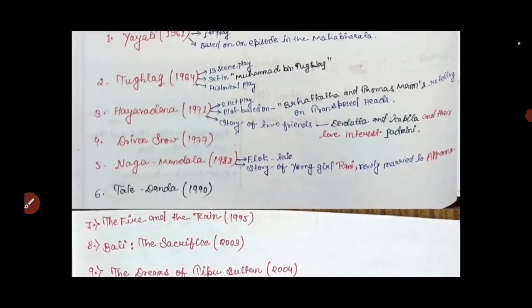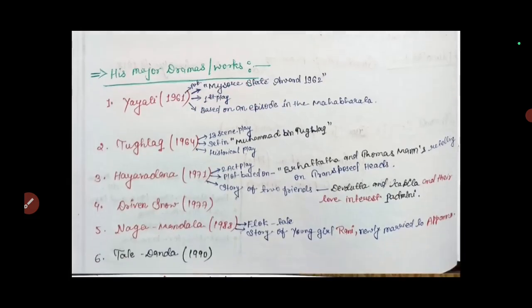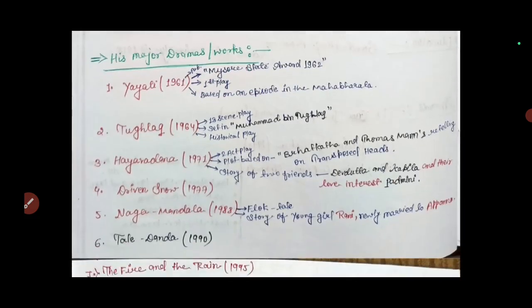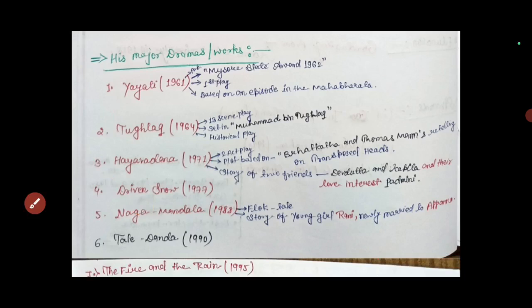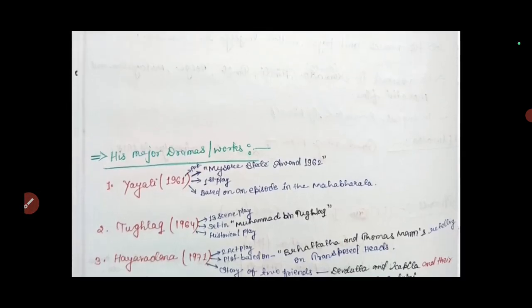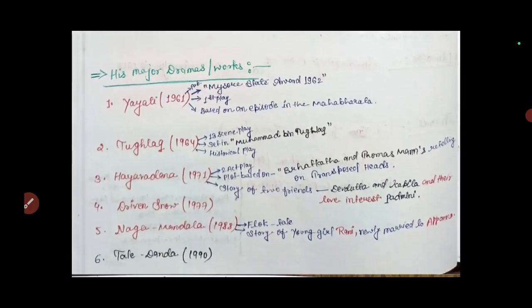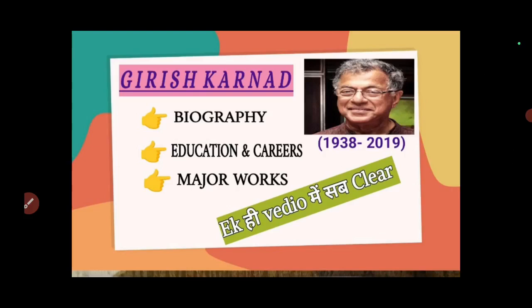These works are written in chronological order, so you should memorize them. These are all important works and questions are asked. In June 2024 on 18th June exam, a chronology question was asked about his works - Yayati, Tughlaq, Hayavadana - with four options to set in chronology. So his works are very important. Please memorize them well and check summaries on surface level for Yayati, Tughlaq, Hayavadana, and Naga-Mandala. So friends, this is all about Girish Karnad's biography, education, career, and major works. I hope you understood and liked this video. If you liked this video, please like, share and subscribe. See you in the next video. Until then, thank you, bye bye, take care.